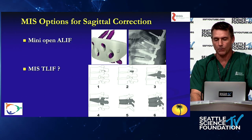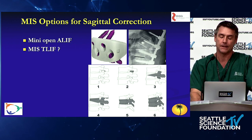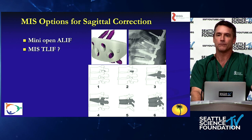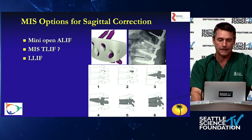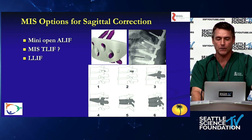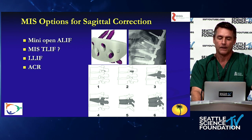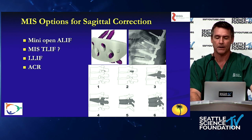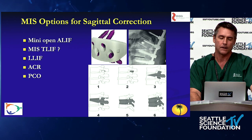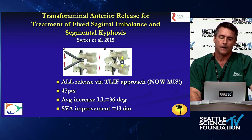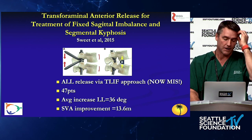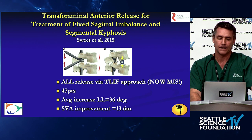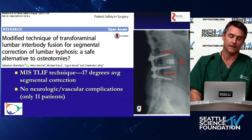What are the options for sagittal plane correction? We can do mini-open ALIFs with hyperlordotic implants, obviating the need for significant posterior work or PSOs — more profoundly impactful on pelvic tilt and lumbosacral alignment. You have lateral realignment, which can be married with PCOs to be more aggressive, and ACRs providing profound three-column ability to manipulate the spine in the sagittal plane, typically beyond what PCOs and PSOs achieve. There are even MIS ways of achieving what Fred Sweet started open — the transforaminal lumbar interbody fusion approach or anterior column release through a posterior interbody approach — now being deployed in MIS mechanisms, albeit in small patient numbers.